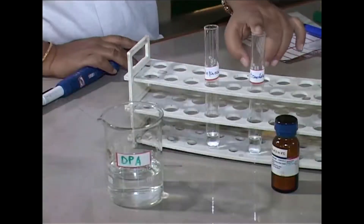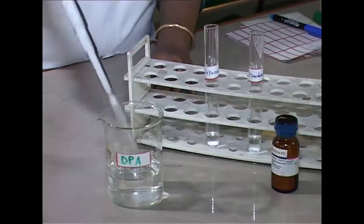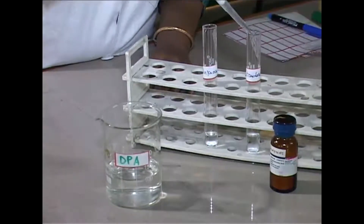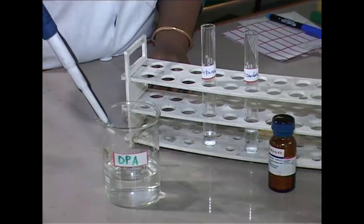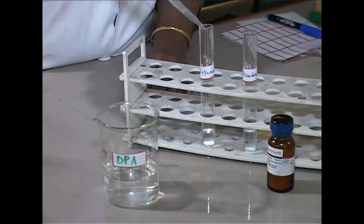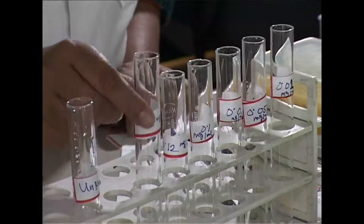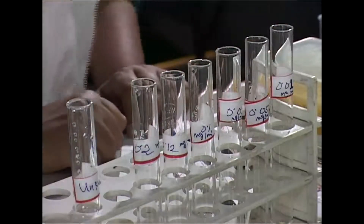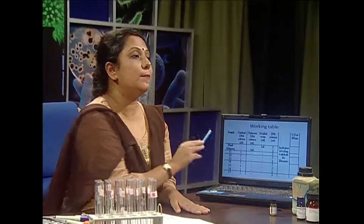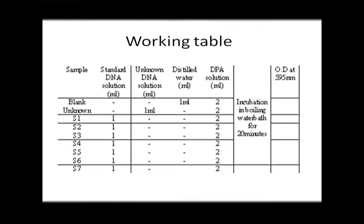We can adapt two processes. In process 1, a single standard can be taken along with the unknown one. The single standard is treated with diphenylamine reagent and the optical density is measured. Process 2 involves a series of standard preparations — from a master stock, a series of standard DNA concentrations are prepared, and you can easily plot a standard curve.